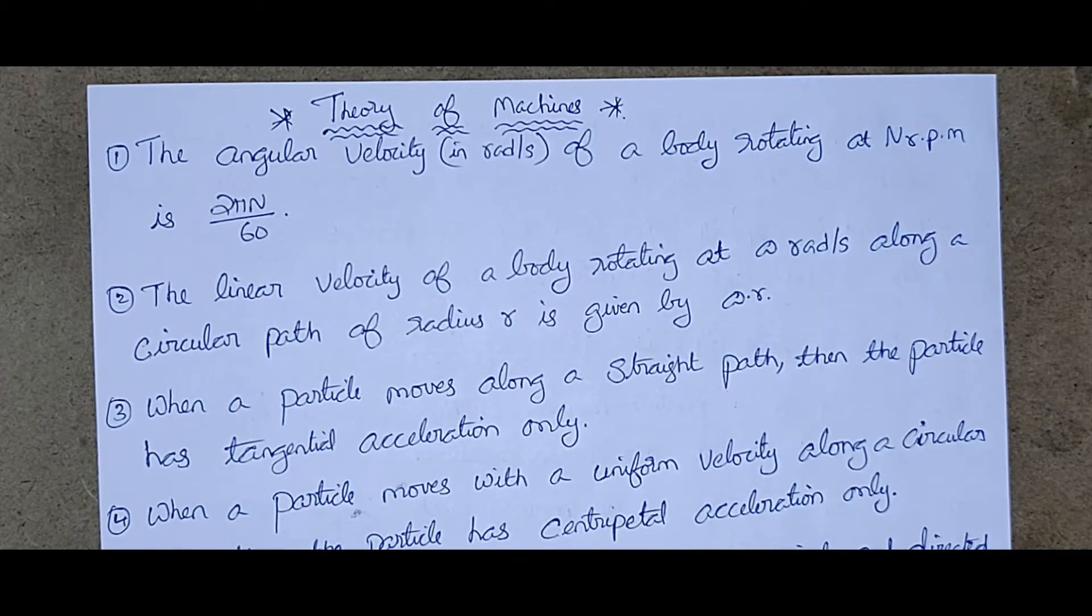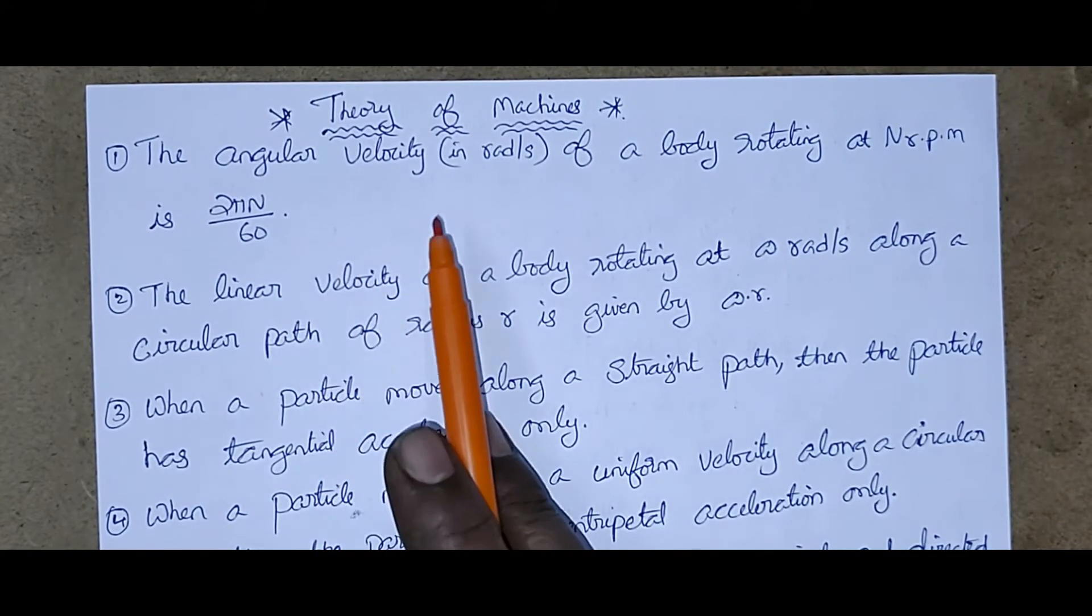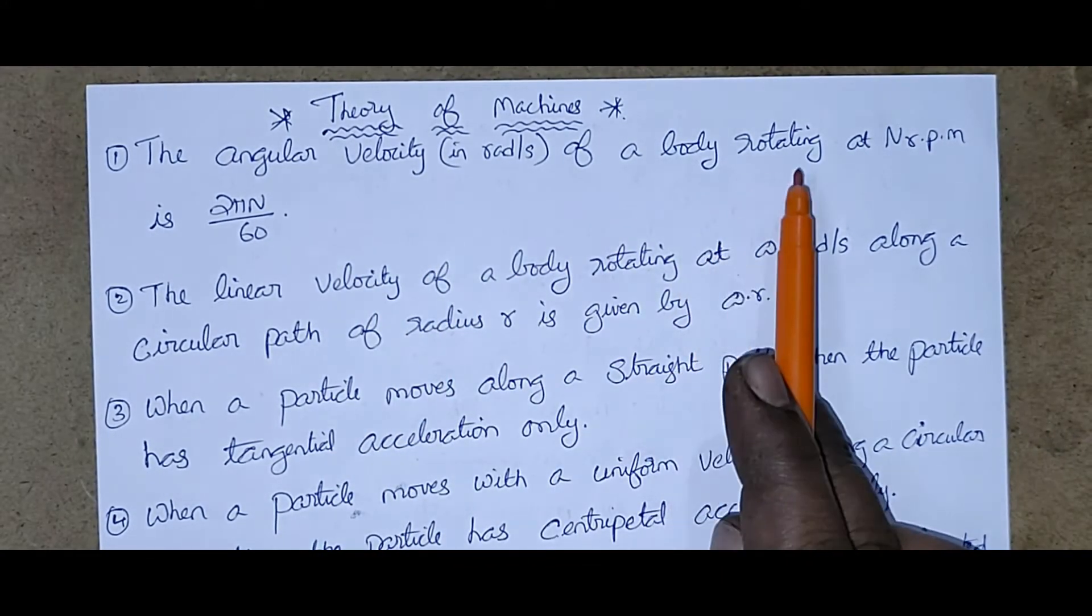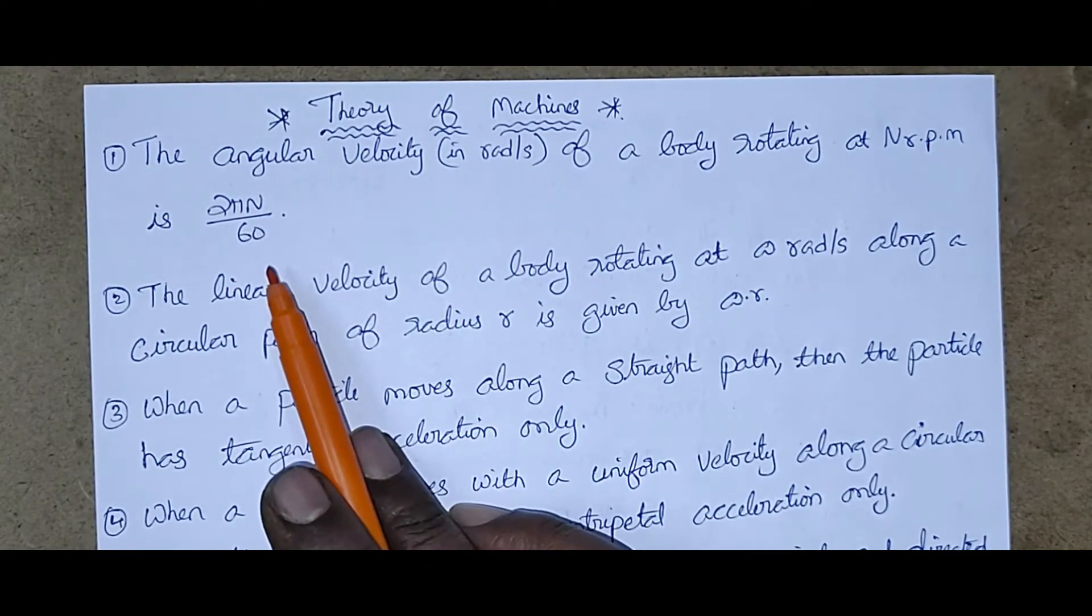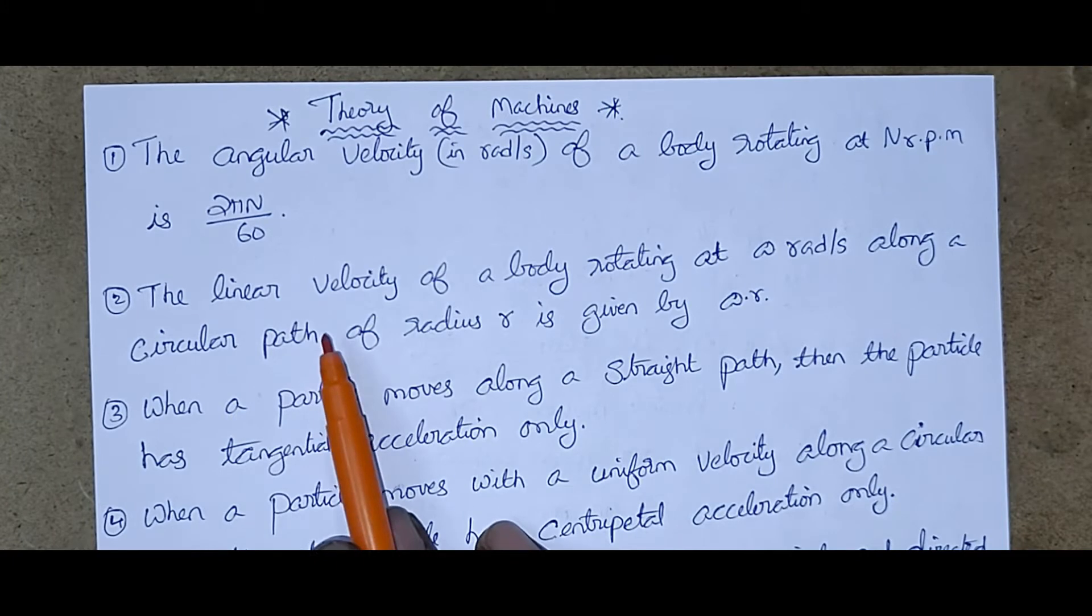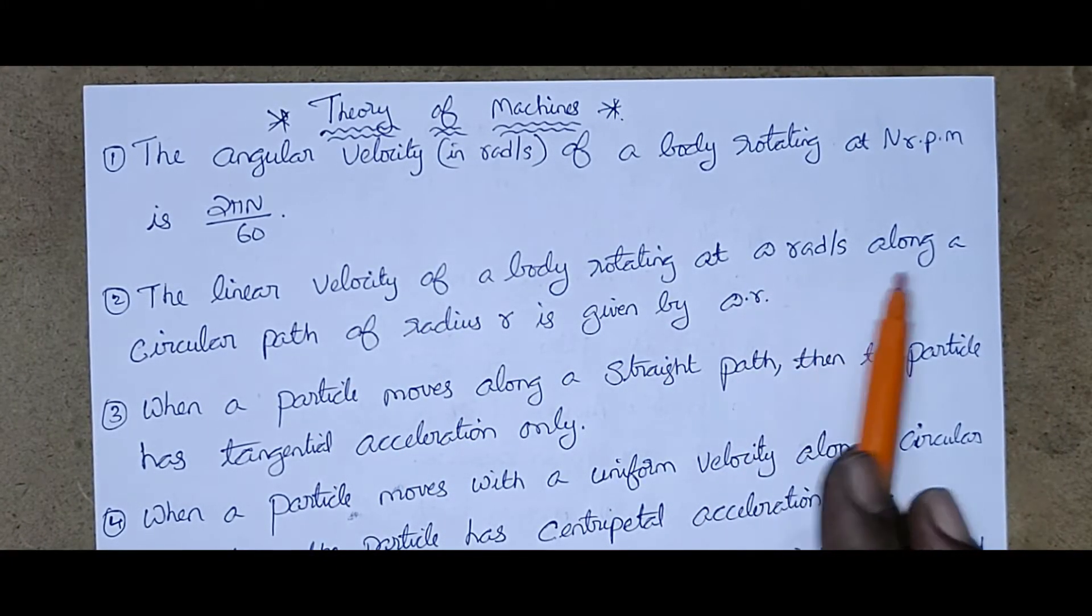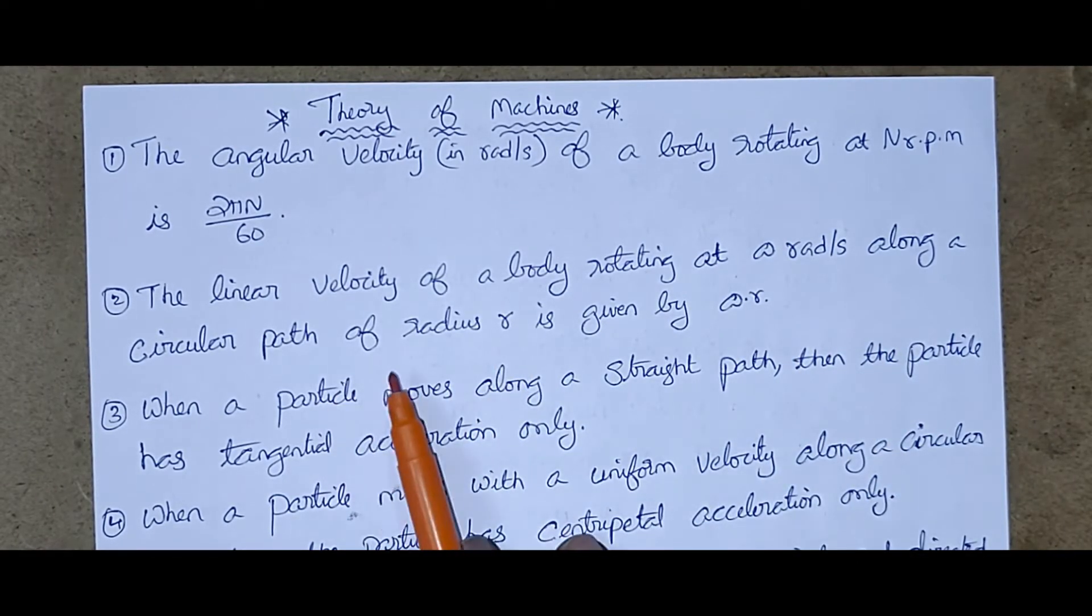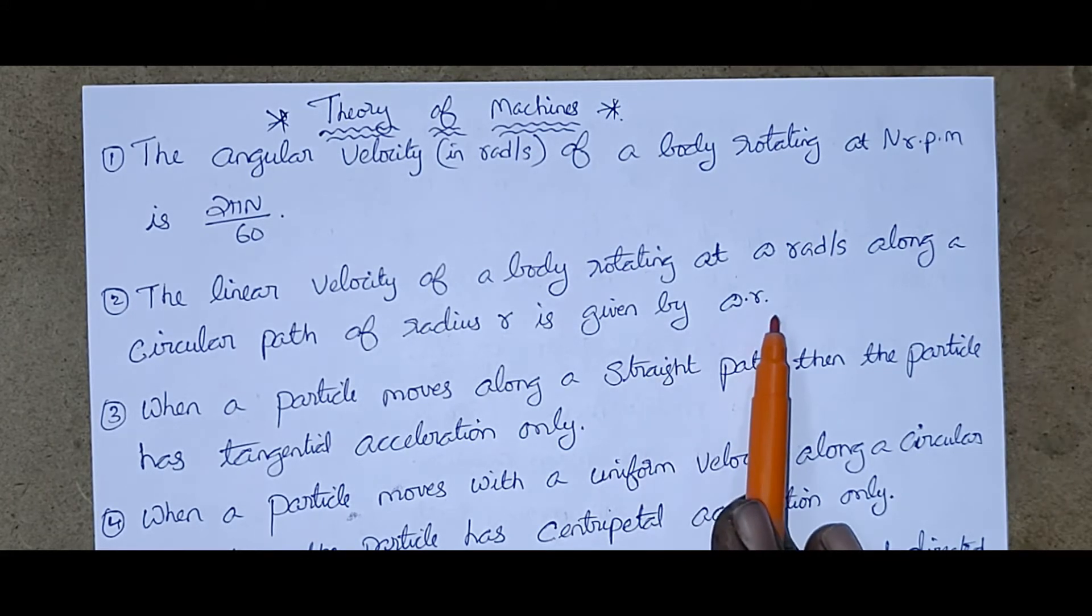We will start now. The angular velocity of a body rotating at N rpm is 2πN/60. The linear velocity of a body rotating at omega rad per second along a circular path of radius R is given by omega into R.